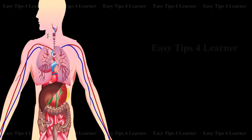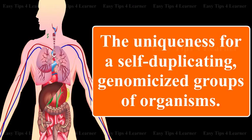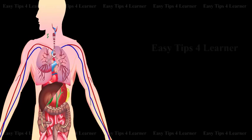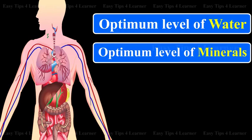Homeostasis differentiates a living being from the non-living world. It provides the uniqueness for a self-duplicating, genomicized group of organisms. Homeostatic mechanisms involve stabilizing an optimum level of water, minerals and other components of the body fluids and other thermal regulations.